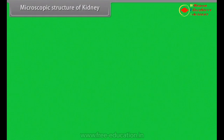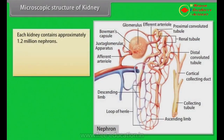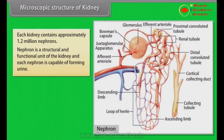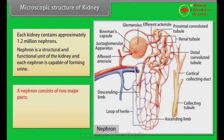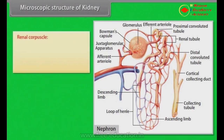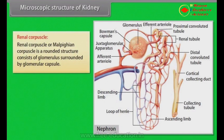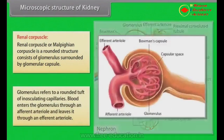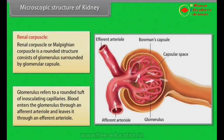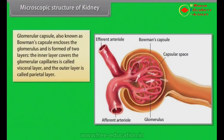Microscopic structure of the kidney. Each kidney contains approximately 1.2 million nephrons. The nephron is the structural and functional unit of the kidney, and each nephron is capable of forming urine. A nephron consists of two major parts: the renal corpuscle and the renal tubule. The renal corpuscle, also called the Malpighian corpuscle, is a rounded structure consisting of a glomerulus surrounded by a glomerular capsule. The glomerulus is a rounded tuft of anastomosing capillaries. Blood enters through an afferent arteriole and leaves through an efferent arteriole. The glomerular capsule, also known as Bowman's capsule, encloses the glomerulus and is formed of two layers: the inner visceral layer and the outer parietal layer.